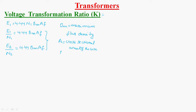F is the frequency. Since a transformer is a constant frequency device, the frequency F remains constant across both equations.